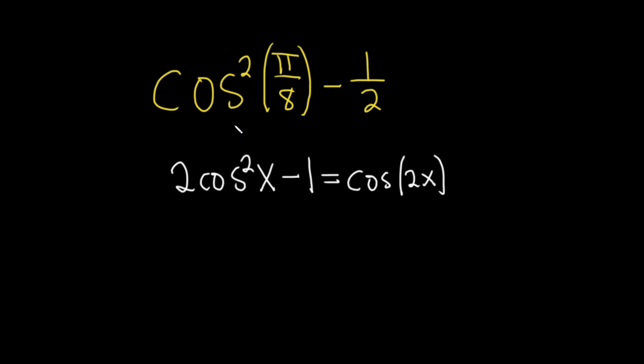So here you see that you don't have a 2 and you have a 1 half. So what you can do is you can use this identity to come up with this. So let's go ahead and divide everything by 2 here.